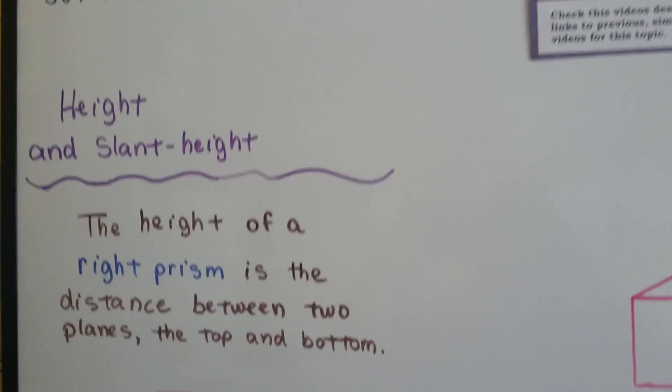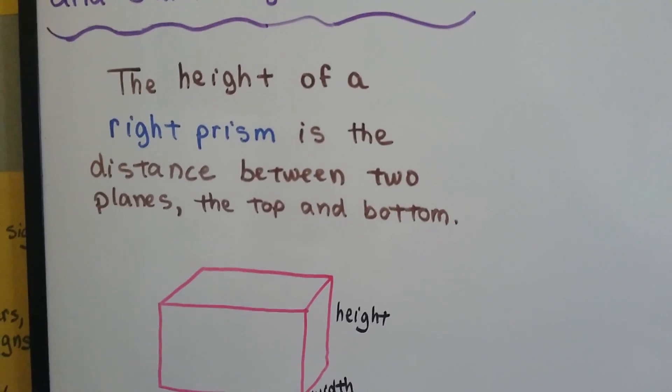Height and slant height. The height of a right prism is the distance between two planes, the top and the bottom.